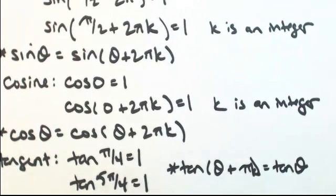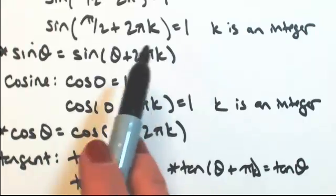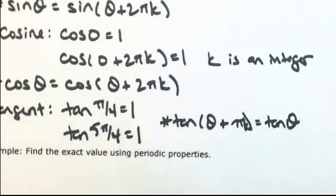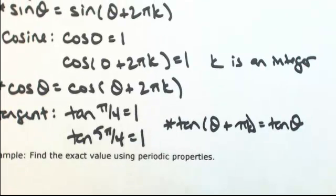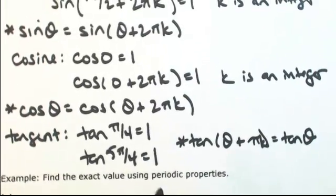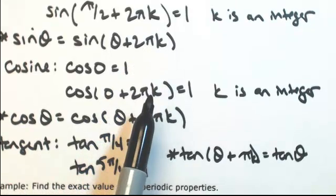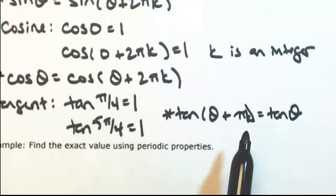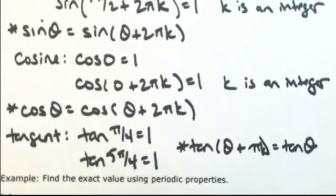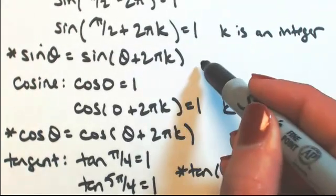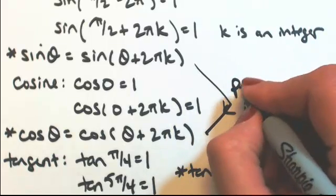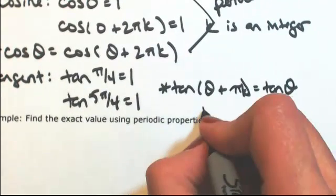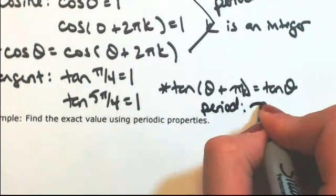So what this means is that after 2 pi, everything's going to start repeating for sine and cosine. But after only 1 pi, everything will start repeating for tangent. We call this the periodic property: if I add 2 pi, we get back to where we started for sine and cosine. But if I add just a pi, the tangent values start repeating. So for sine and cosine, the period is 2 pi, and for tangent, the period is pi.